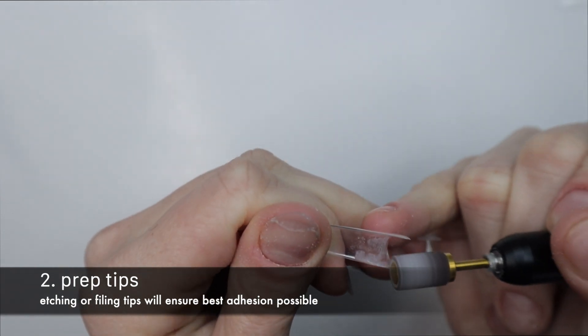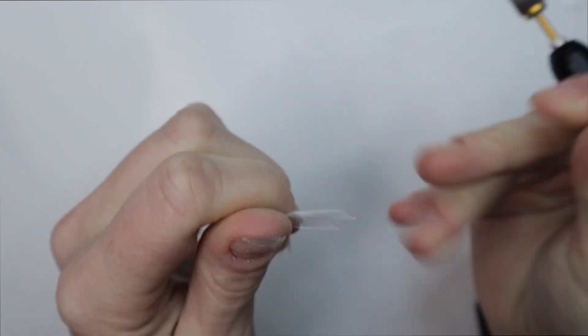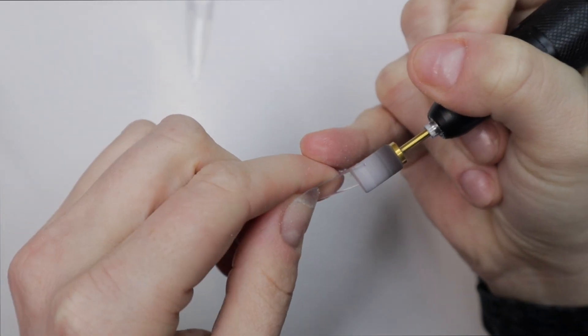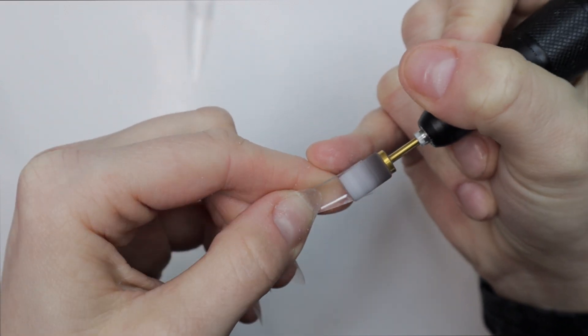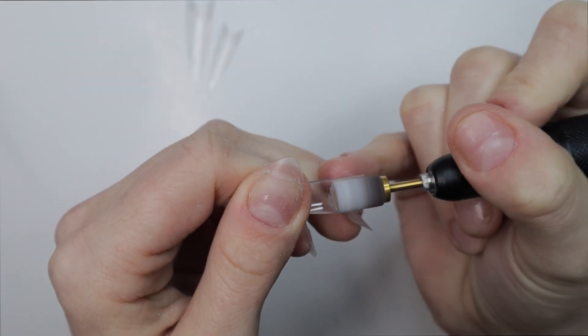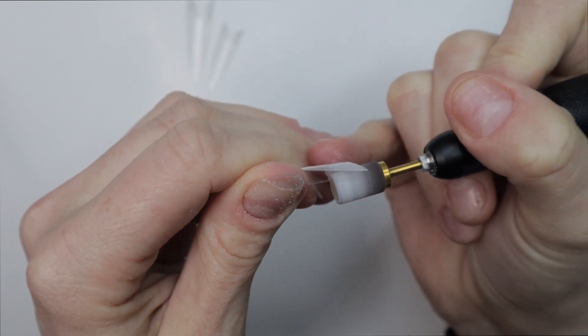The next thing I want to do is prep my tips. This is an optional step but I like to do it. I am using a sanding band and an e-file to prep and etch the underside of my tips. This will ensure that the tip and the glue have the maximum best hold onto my natural nails. So I'm going to etch the underside of all of my tips.